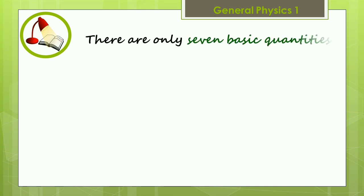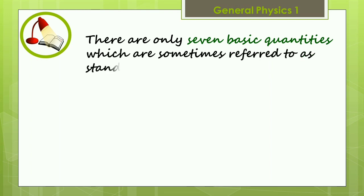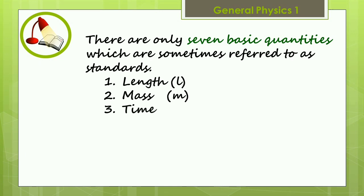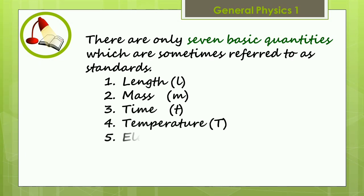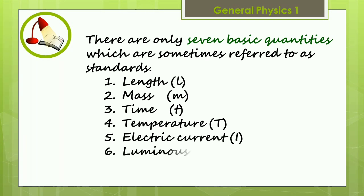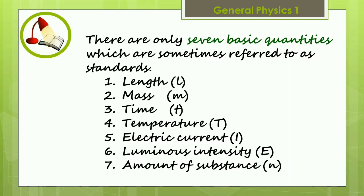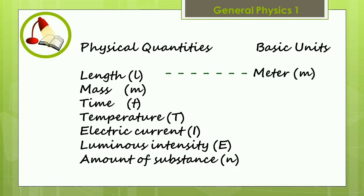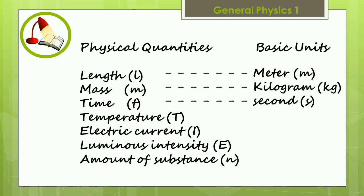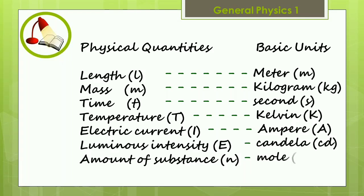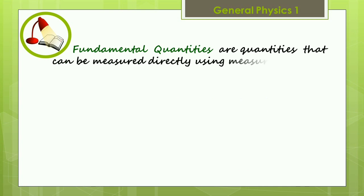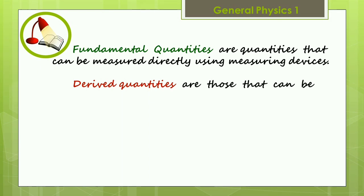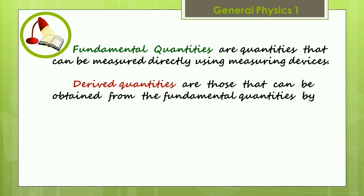There are only seven basic quantities, which are sometimes referred to as standards. Each of the physical quantities has a corresponding basic unit. Fundamental quantities are quantities that can be measured directly using measuring devices. Derived quantities are those that can be obtained from the fundamental quantities by utilizing a given formula.